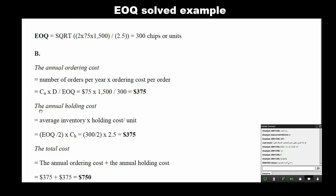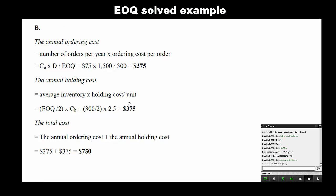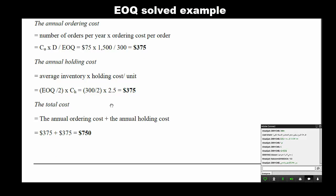For the annual holding cost, we use the average quantity: EOQ divided by 2 equals 300 divided by 2, which is 150 pieces. Multiplied by 2.5, the holding cost per piece, gives 375 dollars. The total cost equals the annual ordering cost plus the annual holding cost: 375 plus 375 equals 750 US dollars.